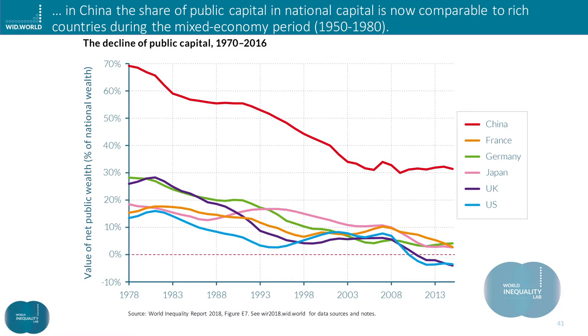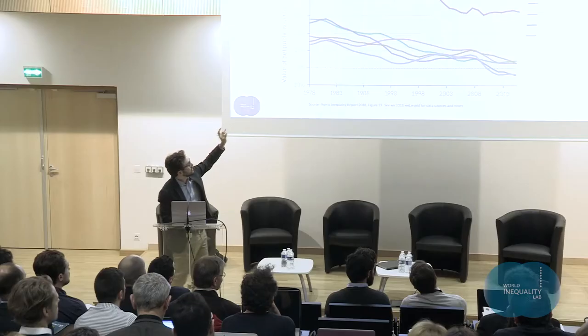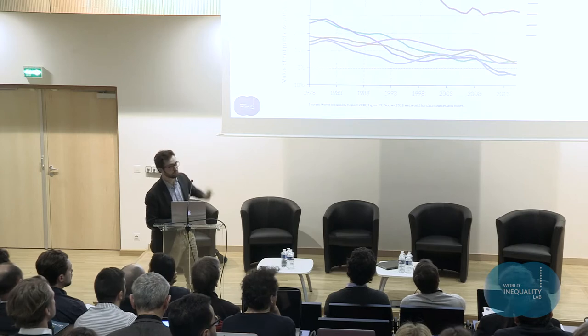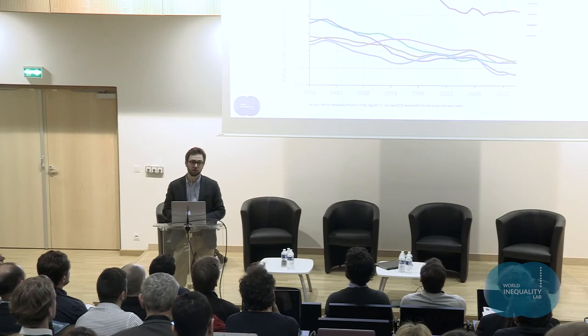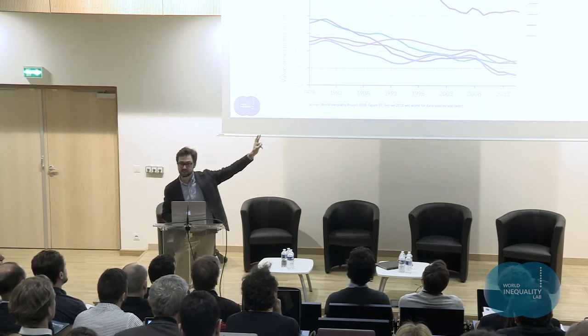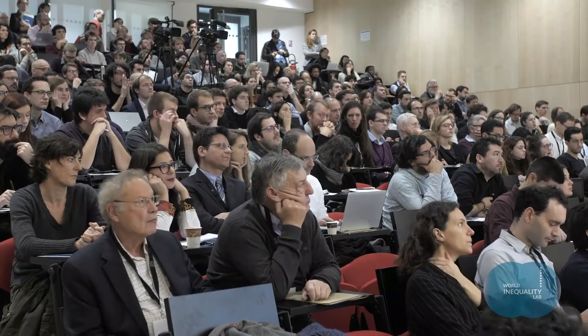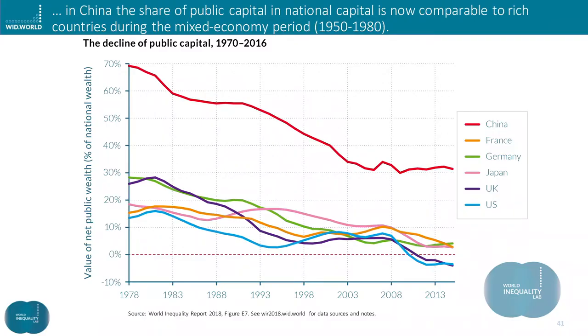Let's look at the decline of public wealth from a different angle — expressing it as a share of total wealth rather than as a percentage of national income. In China in 1978, public capital represented 70% of national wealth, so 30% for private wealth. This decreases to 30% public capital at the end of the period. In a rich country, we move from 20% to close to zero or below zero. What we stress here is that the levels we observe today in China are actually comparable to the mixed economy period in rich countries from the 1950s to the 1980s. So arguably, the Chinese government is much more able to invest in ways that are complicated in rich countries. The explanation for the decline in public capital in rich countries is privatizations and the rise of public debt.